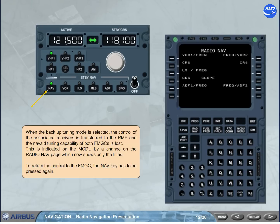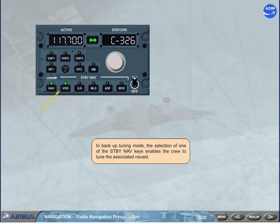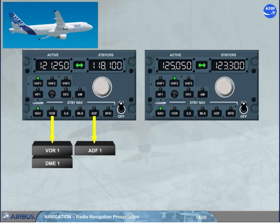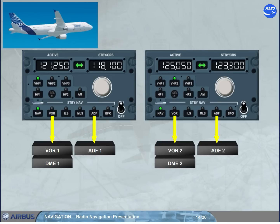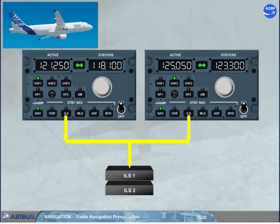To return control to the FMGC, the nav key has to be pressed again. In backup tuning mode, the selection of one of the standby nav keys enables the crew to tune the associated navaid. RMP1 standby navigation keys are associated with VOR/DME1 and ADF1, while RMP2 keys are associated with VOR/DME2 and ADF2. The ILS keys are slightly different: the ILS frequency tuned on either RMP is sent to both ILSs.